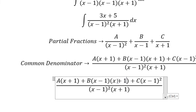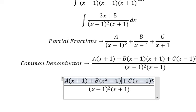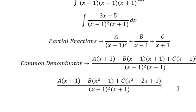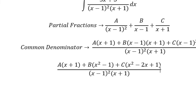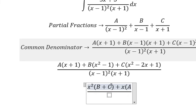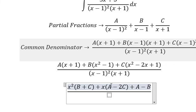And now we need to expand. So we need to arrange based on the term of S. For S squared, we got B plus C. For S, we got A minus 2C. For the constant term, we have A minus B plus C.